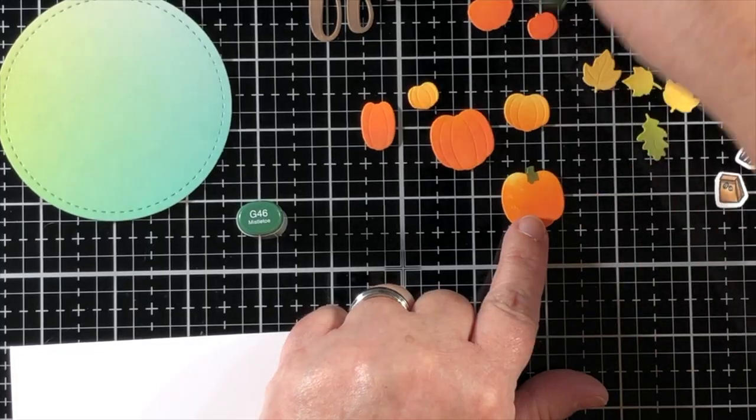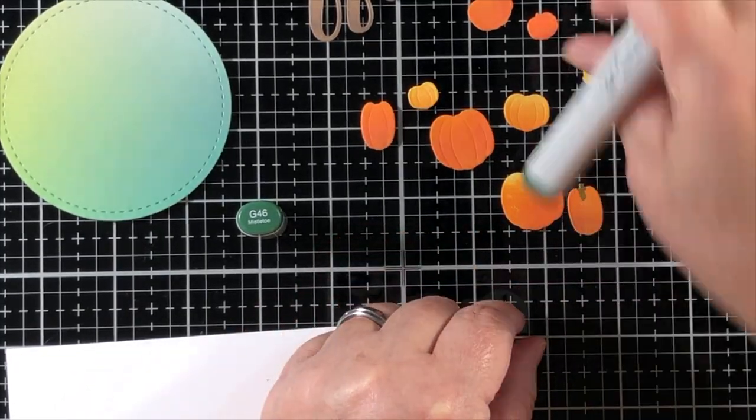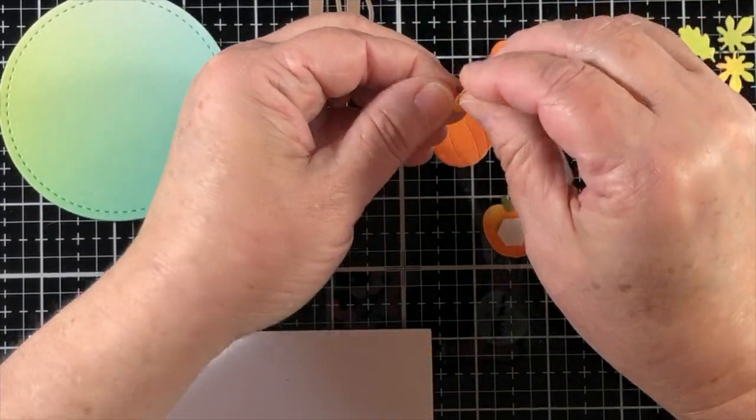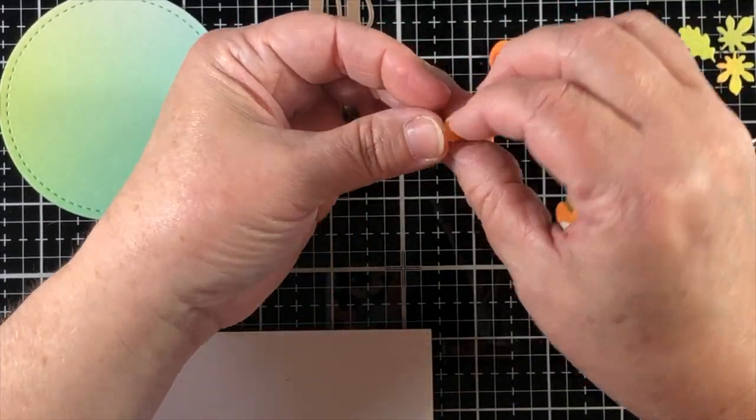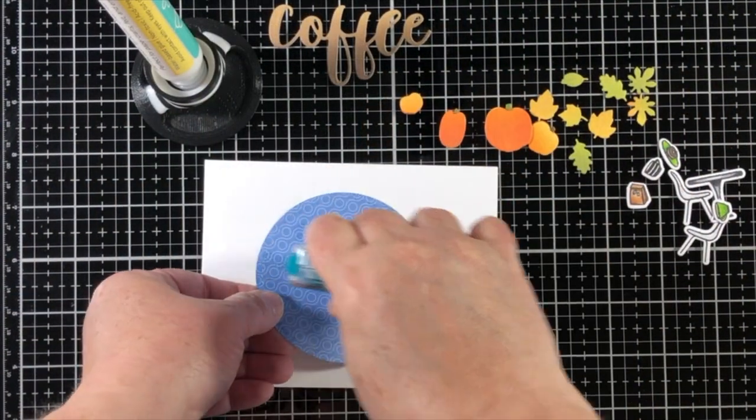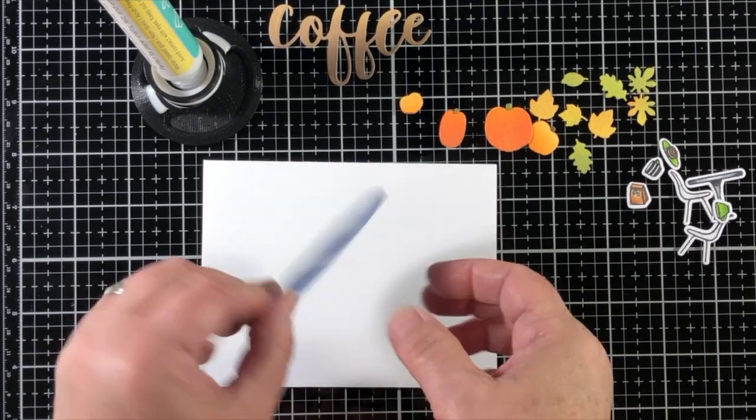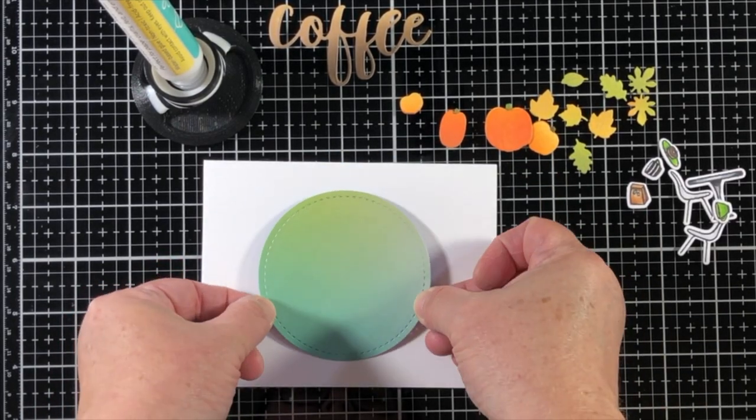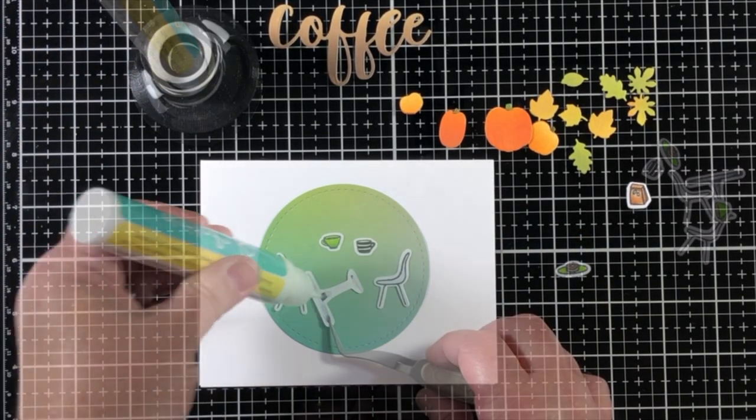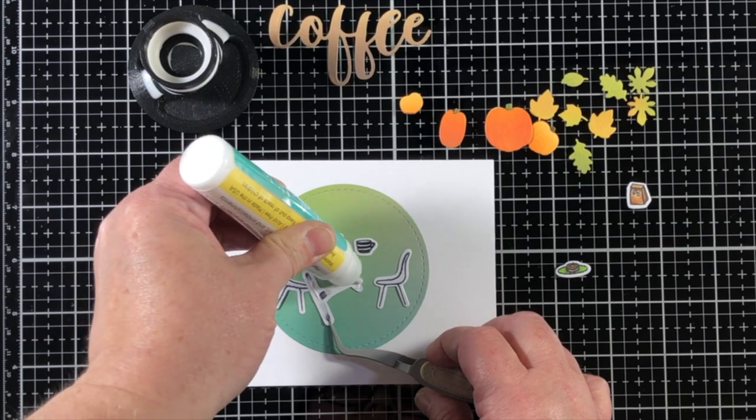These dies for the pumpkins each come in two pieces. There's a bottom piece that has the pumpkin stem, and then the piece that goes above it has some little score or edge marks that you lay on top and it can give you dimension. You can also just glue them down together for a different look.